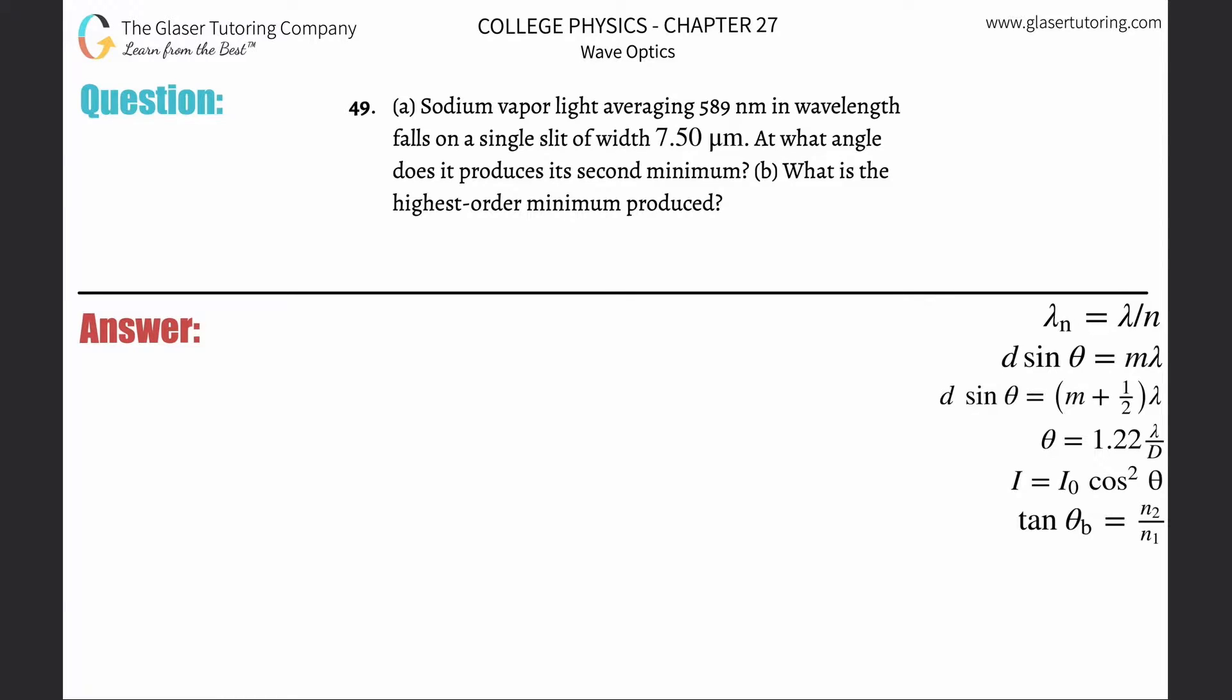Number 49 letter A: Sodium vapor light averaging 589 nanometers in wavelength falls on a single slit of width 7.5 micrometers. At what angle does it produce a second minimum? We're using this formula for single slit minimums. Take a look at number 43 - go back into our channel, check out the Chapter 27 playlist and you'll be able to find it.